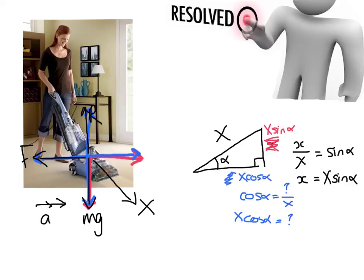The way I think about it is: the one next to the angle is the cosine — there's the angle, and next to it the adjacent side, that's the cosine — and the other one is the sine. Let's apply that to our hoover problem.